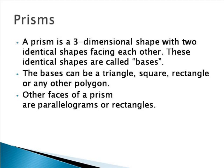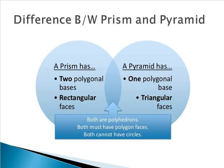A prism is a 3D solid that has two bases — two identical shapes facing each other. These two identical shapes are called bases. The bases can be a triangle, a square, a rectangle, or any other polygon, but the two identical bases must be parallel to each other. The other faces of a prism can be a parallelogram or a rectangle.